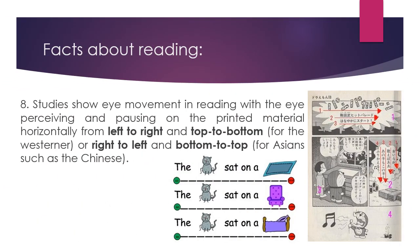Studies also show some eye movements in reading, with the eye perceiving and pausing on the printed material. This can be horizontally from left to right and top to bottom for Westerners, or right to left and bottom to top for Asians such as the Chinese.